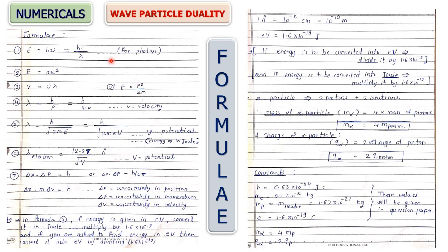All those are formulas based on de Broglie wavelength. The second part of this chapter is Heisenberg's uncertainty principle. The formula is: uncertainty in position Δx multiplied by uncertainty in momentum Δp is always ≥ h/4π. For solving numericals, we take the value as simply h.